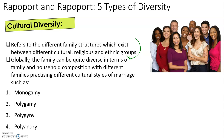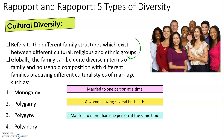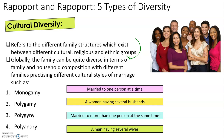So: monogamy is being married to one person at a time — mono means one. Polygamy is being married to more than one person at the same time, and is actually illegal in this country. Polygyny is a man having several wives. Polyandry is a woman having several husbands. Of those two, men having multiple wives is generally the more commonly practised one globally.